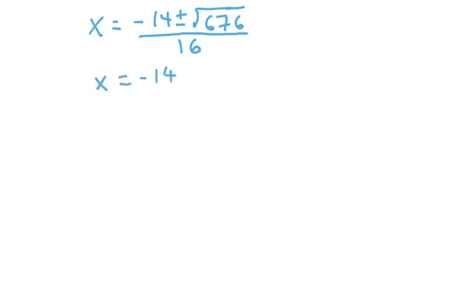So, negative 14 plus or minus 26 over 16. This time, the radical goes away. It didn't go away on the first one. I'll tell you what that signifies in a minute. If the radical does go away, it is best to think about the two separate solutions that you get, whether you have the plus sign or the minus sign in the numerator.